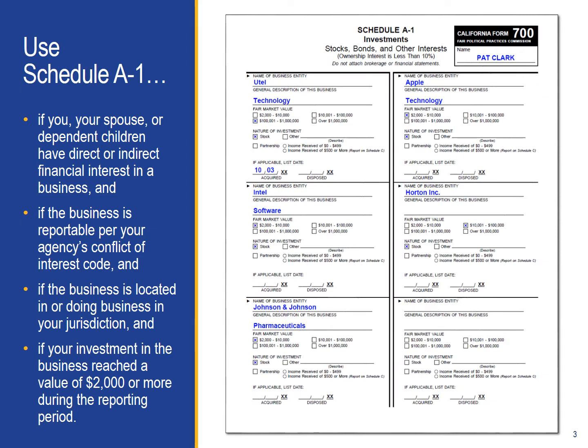As the title of the schedule indicates, this is where you will report your interest in stocks and other types of investments, or perhaps a partnership interest of less than 10% in a particular business entity. This includes these same types of interest owned by your spouse, registered domestic partner, or children.